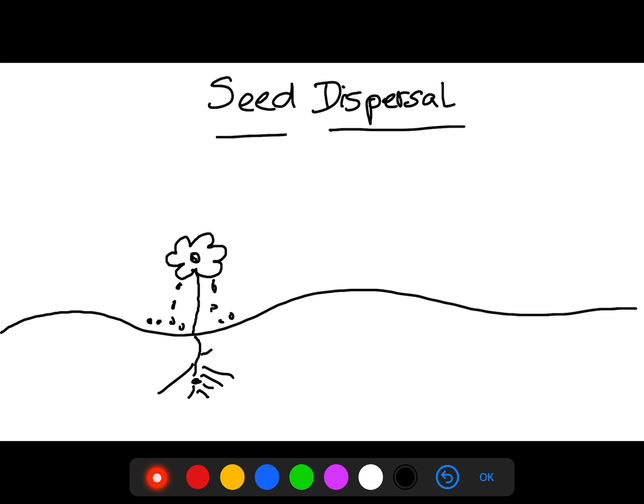But how do seeds go somewhere? Seeds don't have legs. They cannot stand up and walk. They cannot get into a car. They cannot jump on an airplane. So how do they move? Well, different things help them move. The first thing that helps them move, well, there's lots of things, but we're going to look at three today. The first thing is wind.